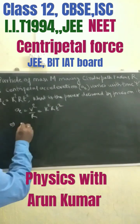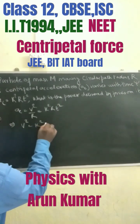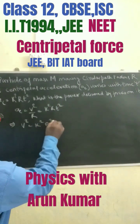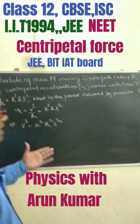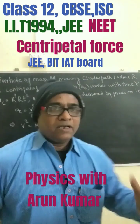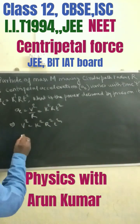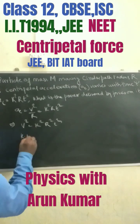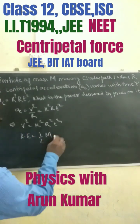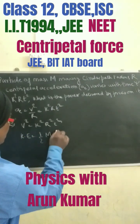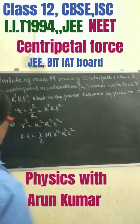From here we can get V square equals K square R square T square. Now the kinetic energy at any time of the particle can be written as half N A square R square T square.